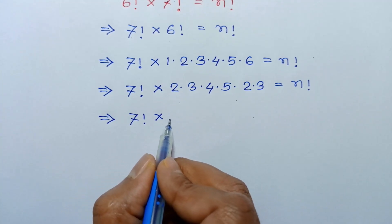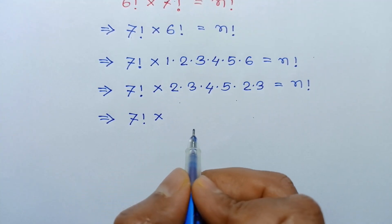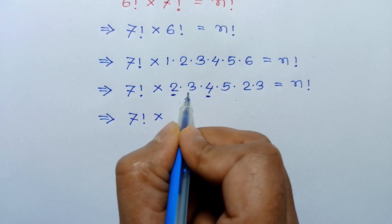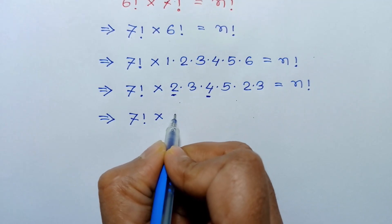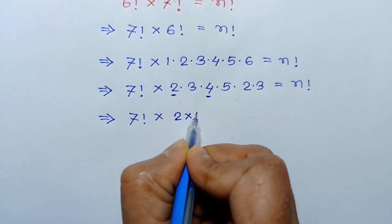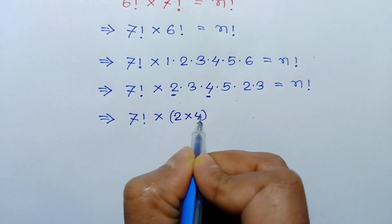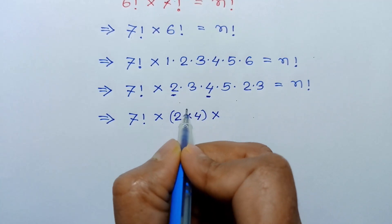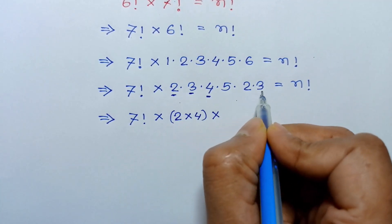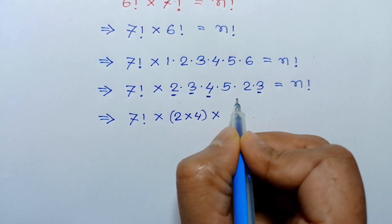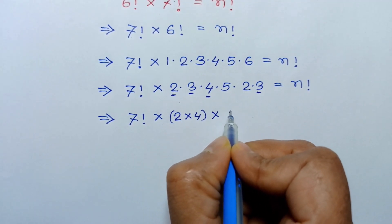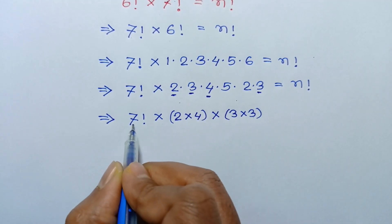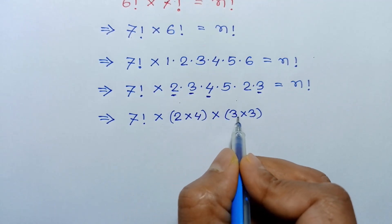This 7 factorial and the next number is 8. To make 8 we need this 4 and this 2, so it will be 8. Rearranging, 2 times 4 is 8, and the next number is 9. This 3 times 3 will be 9. Taking this 3 and 3, we have 3 times 3. This is 7 factorial, this is 8, this is 9.